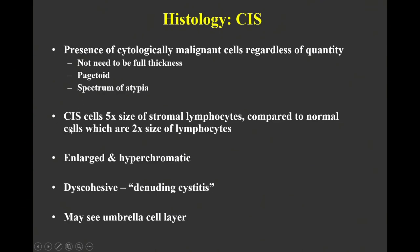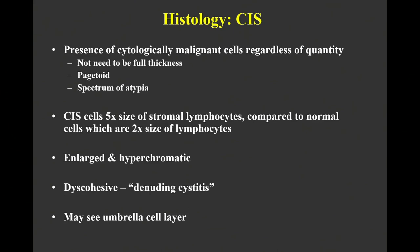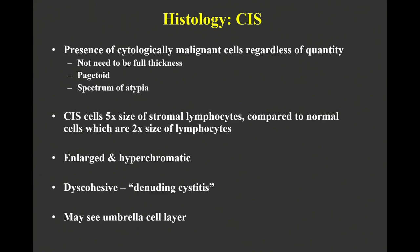Something we did with morphometry years ago, but which you can now do by eyeball, is to compare cell sizes to stromal lymphocytes, which you always have in a bladder biopsy. Normal urothelial cells are about two to three times the size of a lymphocyte, whereas CIS cells — looking at the worst cells in the case — are typically about five times the size of a lymphocyte, significantly larger. That's why they jump out at low power, and I still find this helpful in assessing cases that aren't straightforward.